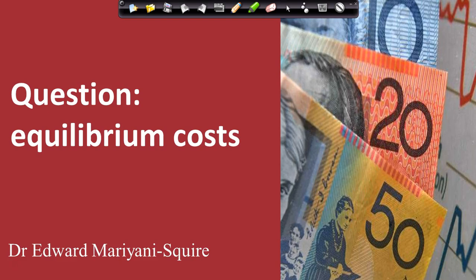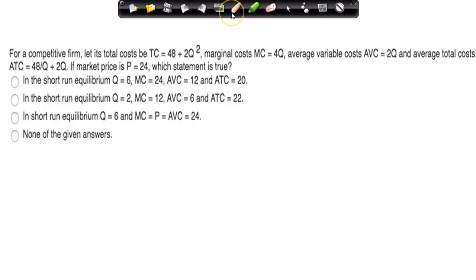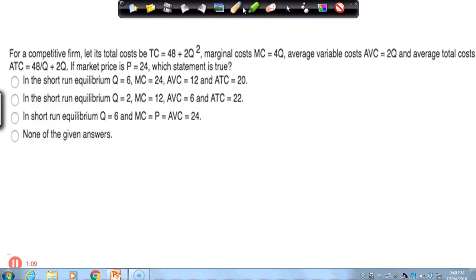A student has asked about a multiple-choice question which they didn't know the answer to, so let's see if we can work it out. Here's the question: for a competitive firm, let's say total cost equals 48 plus two times the output squared. Marginal costs are four times the output, average variable costs are two times the output, and average total costs are 48 divided by the output plus two times the output. If the market price is 24, which statement is true?